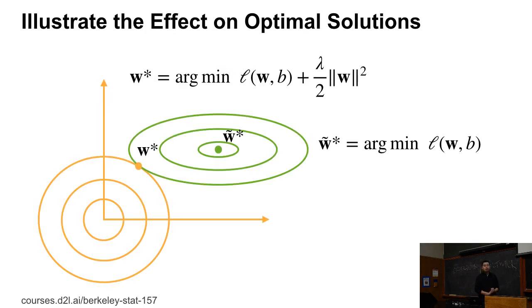Then we can visualize how it works. The green circles are the loss function, and the optimal point is W̃*. So we can solve it by minimizing the loss function over the training data and weight.